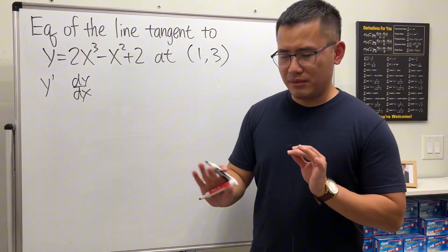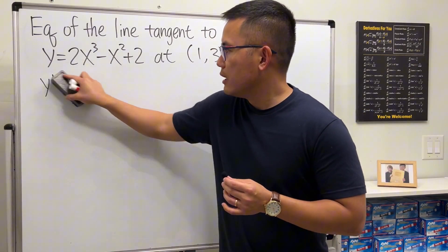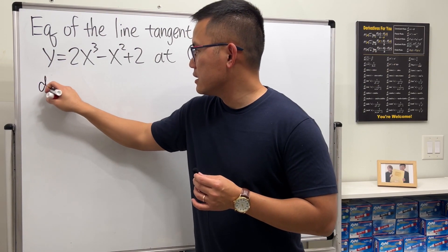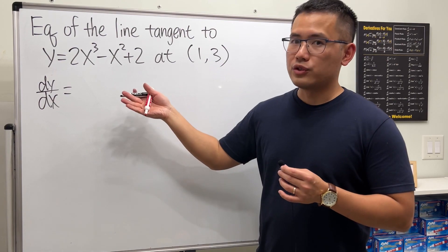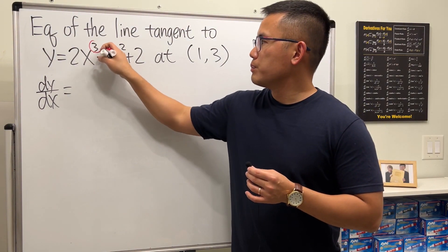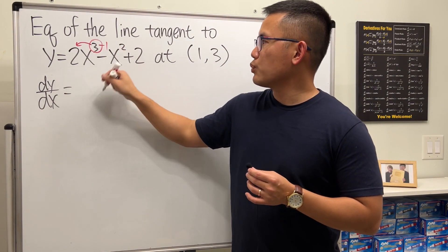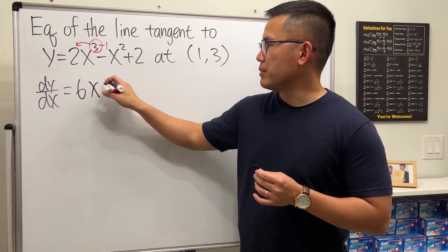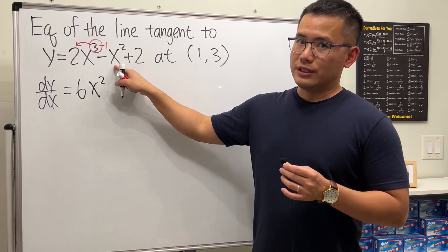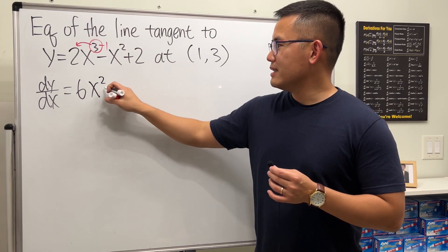These are all power functions, so we can put the exponent to the front and then minus one. Three times two is six, and then x to the second power.